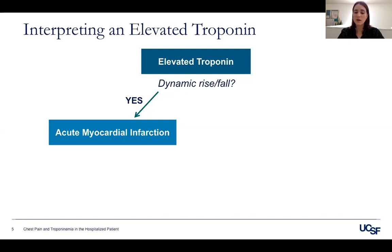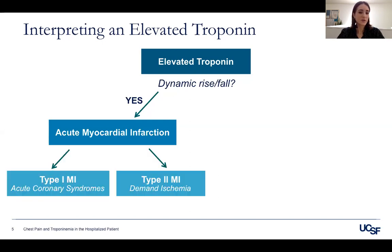If with that first troponin the EKG looks concerning or the patient is having symptoms suggestive of acute coronary syndrome, you should proceed directly to treatment and not wait for a repeat. But if you are trending the troponin and it's changing, consider acute myocardial infarction — there are different types, and I'll be focusing on two here.